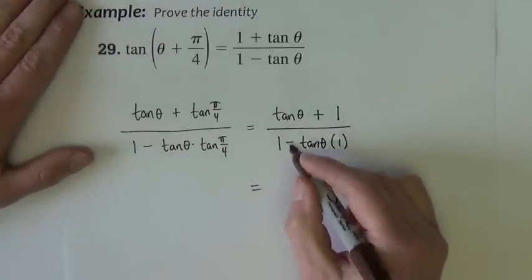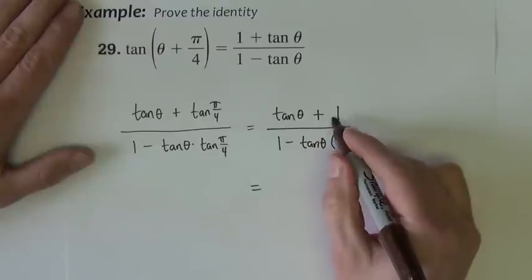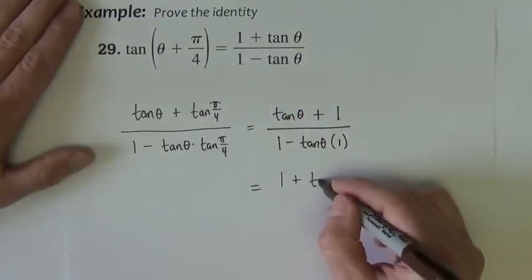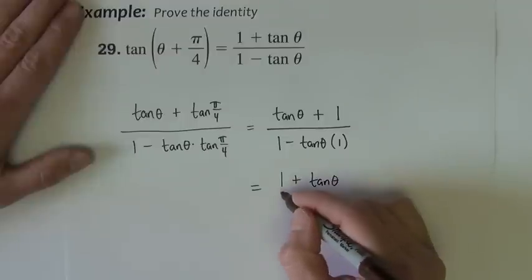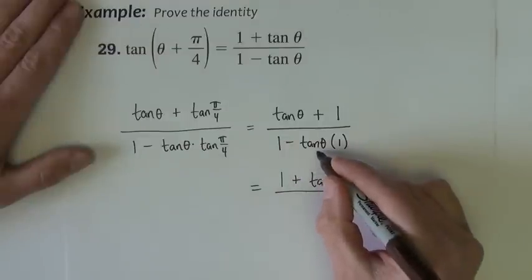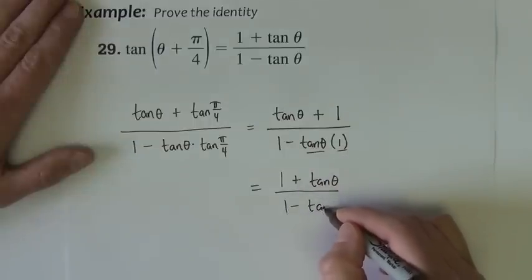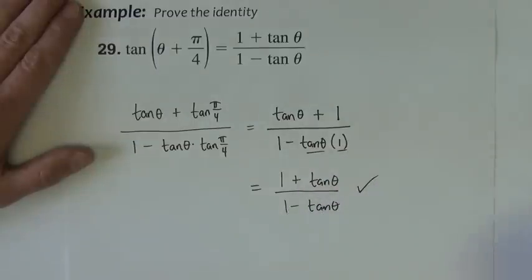Now in the numerator, tangent θ plus 1 is equivalent to 1 plus tangent θ. So if you just want to rewrite them, you're welcome to do that. And of course, down here, tangent of θ times 1 is just tangent of θ. And that's proven.